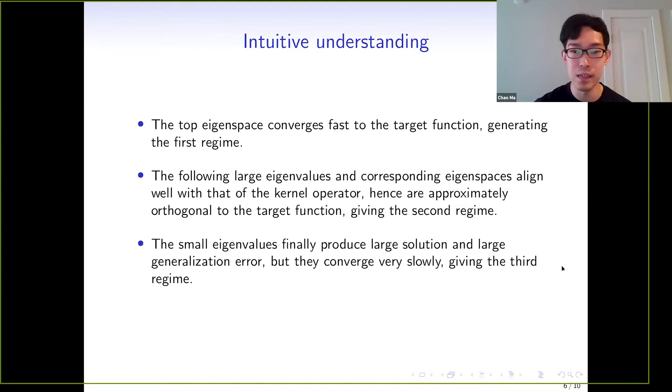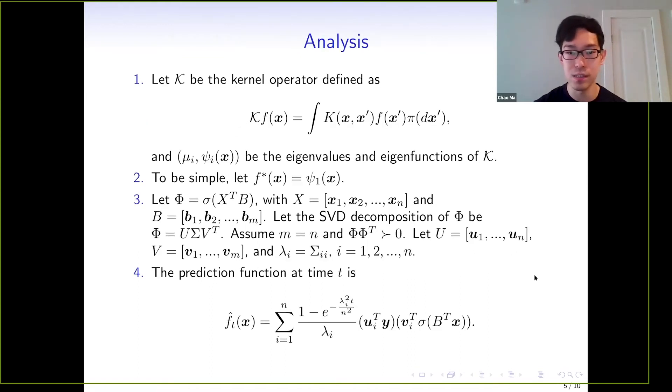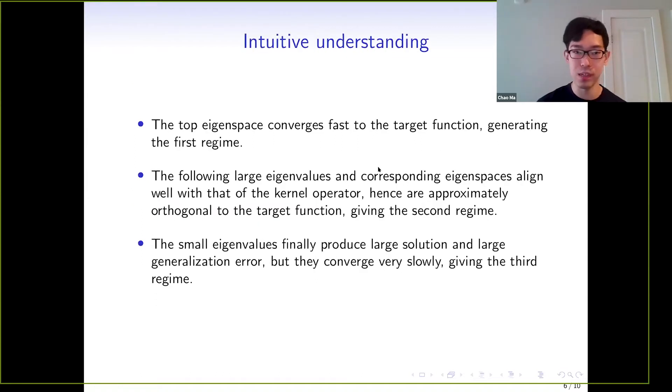So intuitively, when the number of data n is large, the top eigenvalues and eigenvectors will align well with the eigenvalues and eigenvectors of the kernel operator K. The top eigenspace will align well with the target function, so it will converge fast to the target function in the first regime. The following large eigenvalues and corresponding eigenvectors also align well with the kernel operator, but in these directions, which are orthogonal to the target function, they do not contribute much to our test error. Finally, the small eigenvalues produce large solutions and large generalization error, but they converge very slowly.